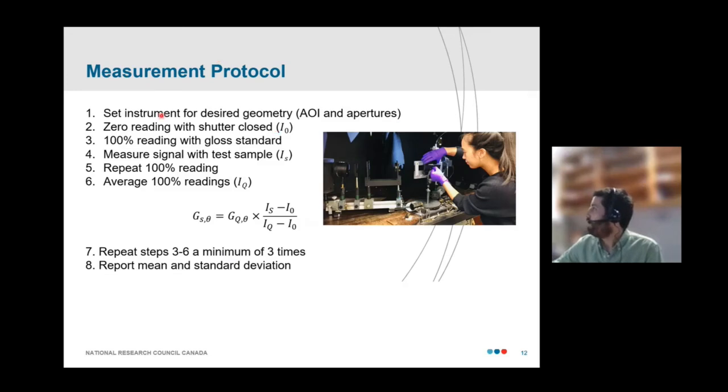So, a typical measurement protocol after a warmup period, we would set the instrument for the desired geometry. So, that involves selecting the right receiver aperture and then running through this prism alignment procedure that I described to set the angle of incidence. We take a zero reading with a shutter closed. And then we take three readings, two with the gloss standard in the beam and then the sandwich reading of the actual test sample. We average those two readings of the gloss standard to reduce any drift. And then we compute the gloss of the actual test sample according to this equation, making use of the known gloss of our standard. And that's repeated several times in order to determine a sample mean and standard deviation.